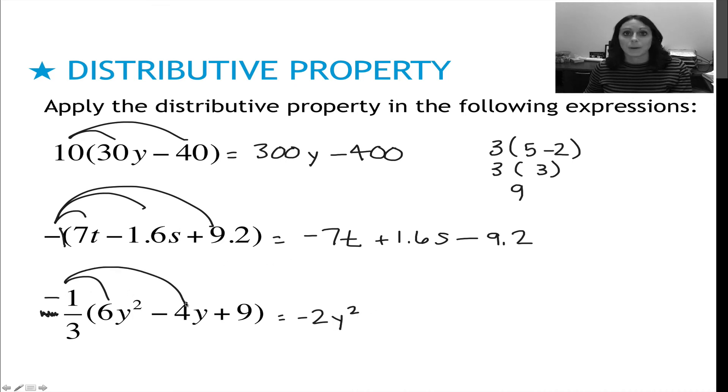Negative 1 times negative 4 is positive 4 divided by 3. Positive 4 divided by 3 is an ugly, ugly decimal. So I get to cheat and just write it as negative 4 thirds. Please do not turn that into 1.3 repeating, or even worse, round it to 1.3. Leave it as 4 thirds. That's the most exact answer. And my last one, negative 1 times positive 9 is negative 9 divided by 3 is negative 3. And that's my final answer.